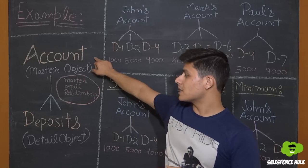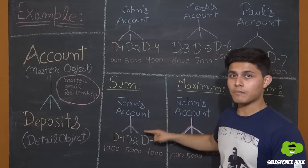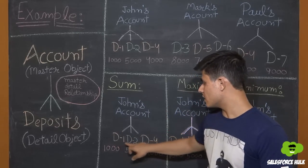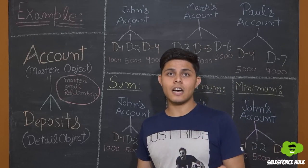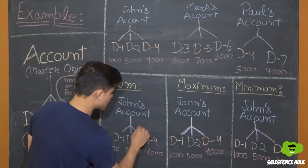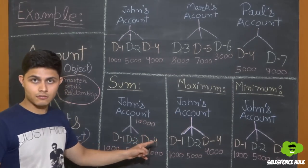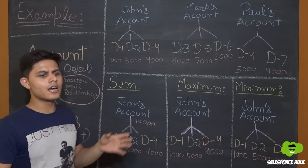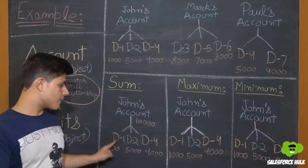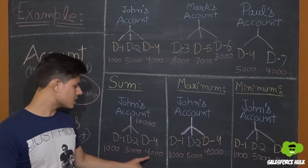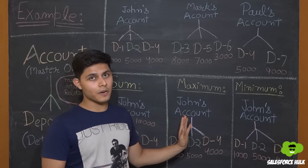We'll create a Rollup Summary Field on the Account object to aggregate the information from child records. For example, if we create a Rollup Summary Field and select the operation as sum, in John's account there are three deposits — D1 at 1,000, D2 at 5,000, and D4 at 4,000. After creating the Rollup Summary Field with sum operation, a field will be created in John's account displaying the sum: 1,000 plus 5,000 plus 4,000, which equals 10,000. On a single field you can set only one operation, so if you want sum, maximum, and minimum, you'll need to create separate Rollup Summary Fields for each.